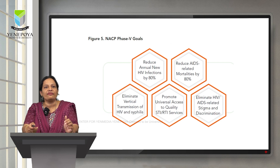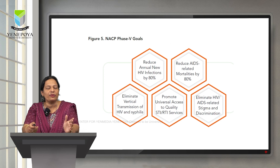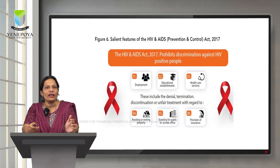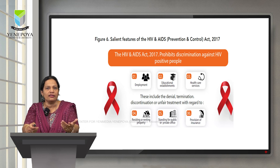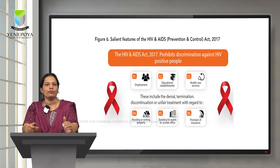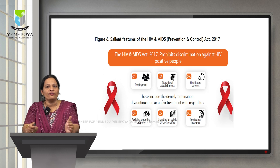These are the NACP Phase 5 goals, and we have looked at the strategies needed to achieve these five goals. The HIV and AIDS Act 2017 prohibits discrimination against HIV positive people. This includes denial, termination, discontinuation, or unfair treatment with regards to employment, educational establishments, healthcare services, residing or renting property, holding public offices, and provision of insurance.